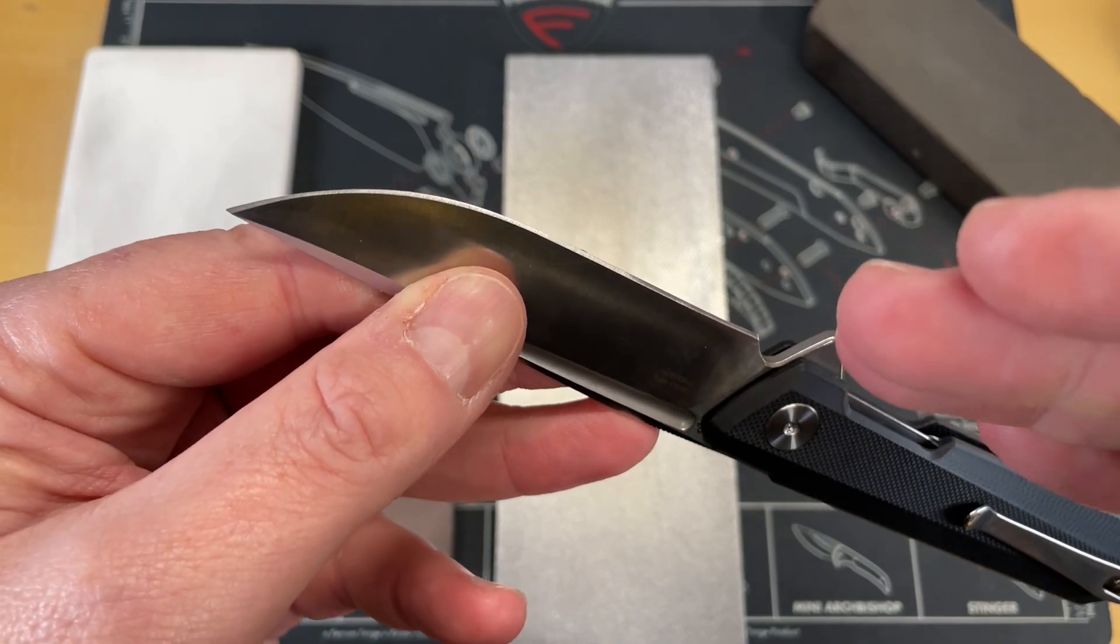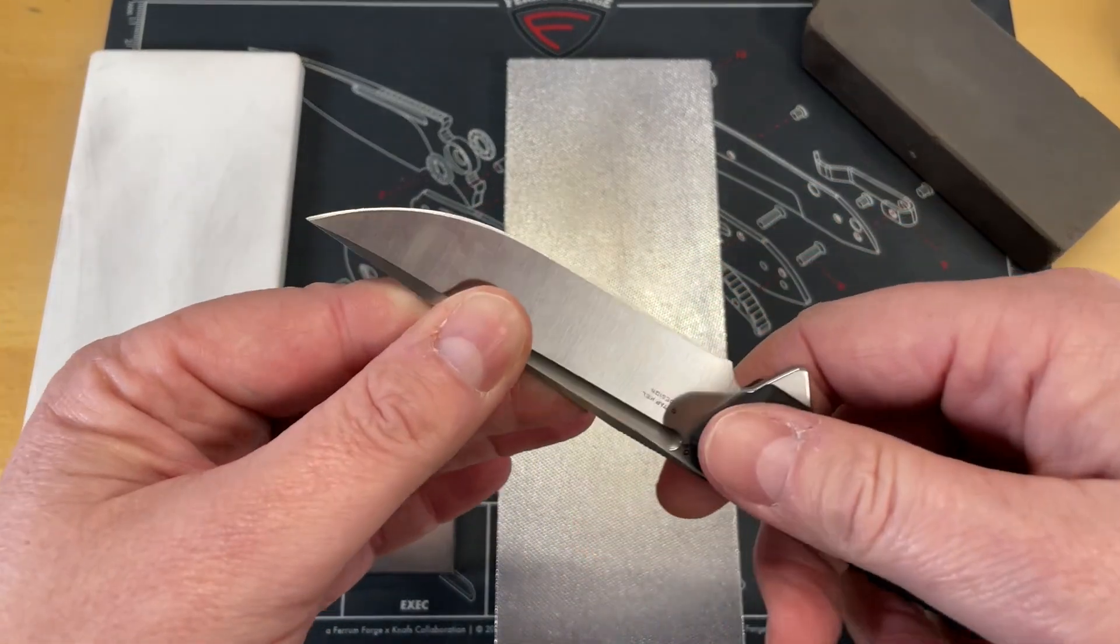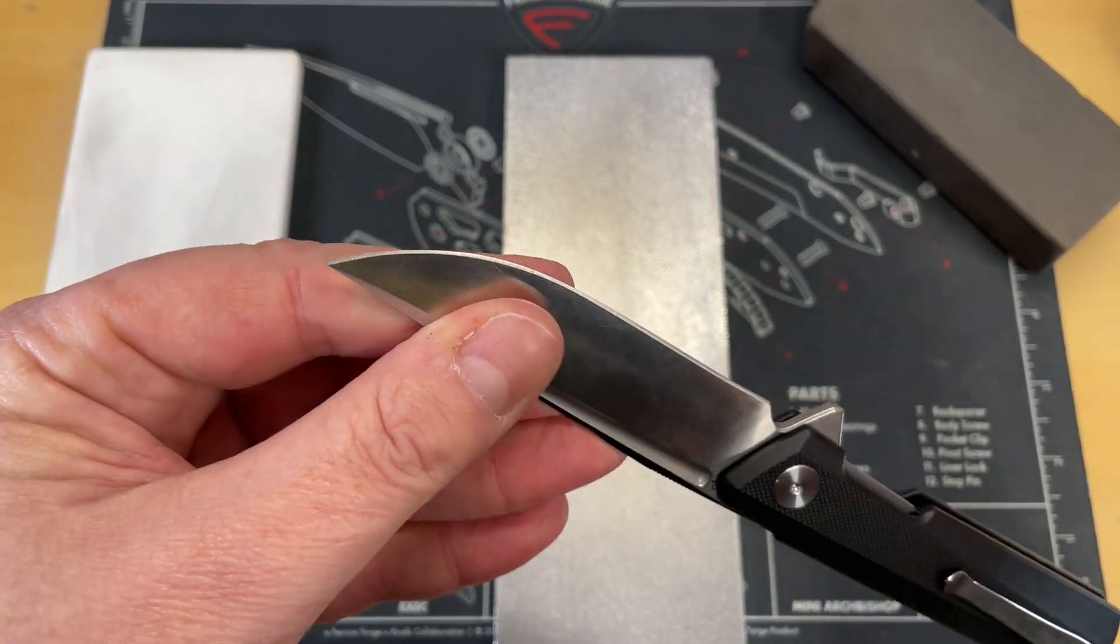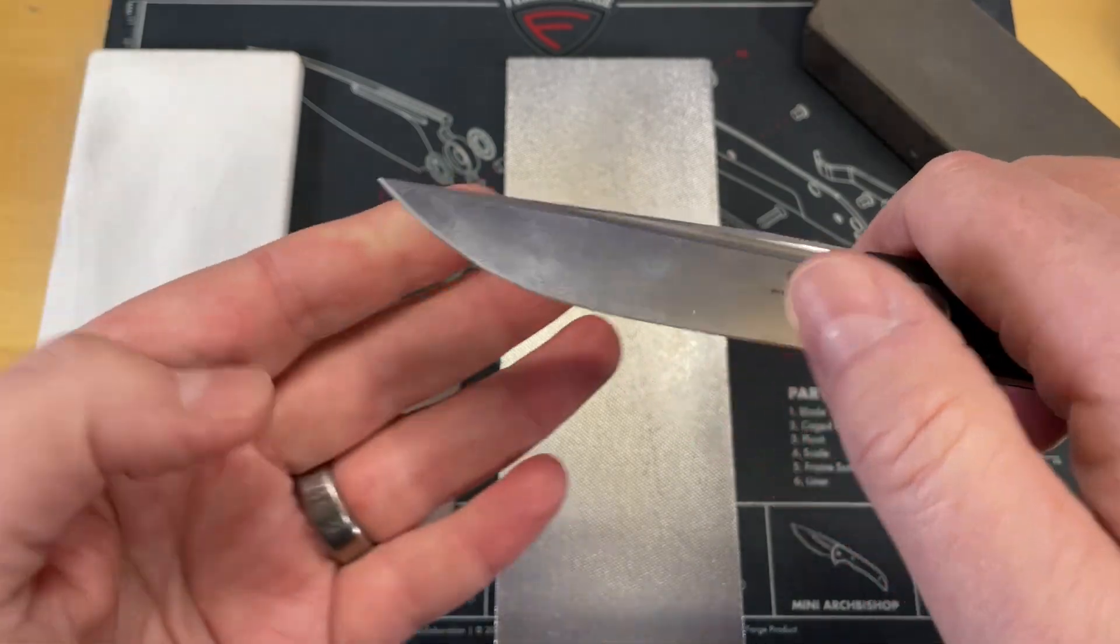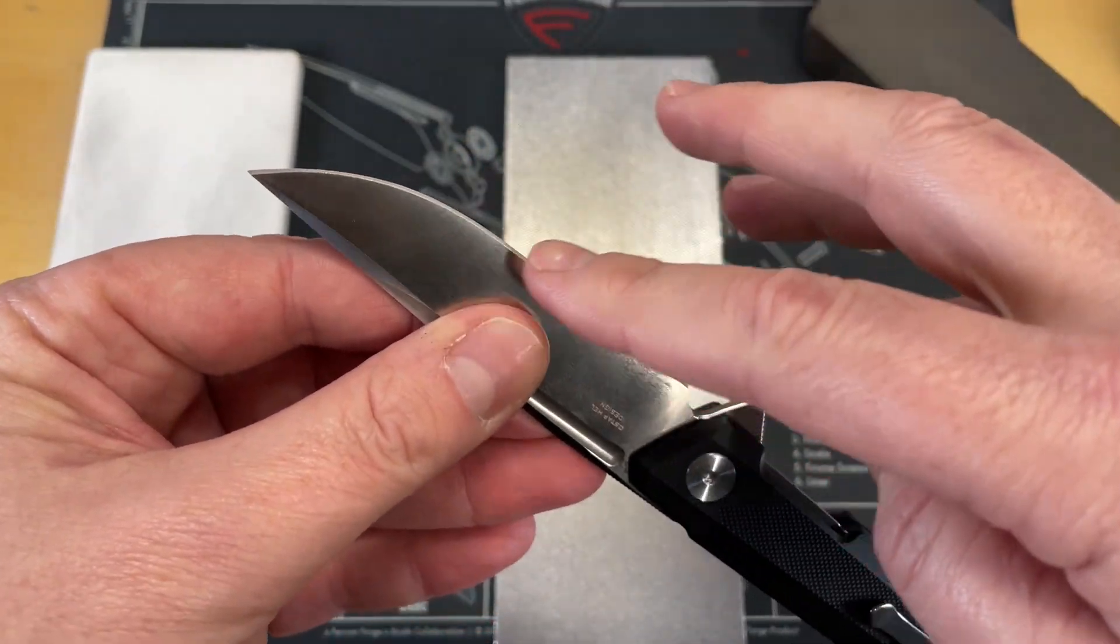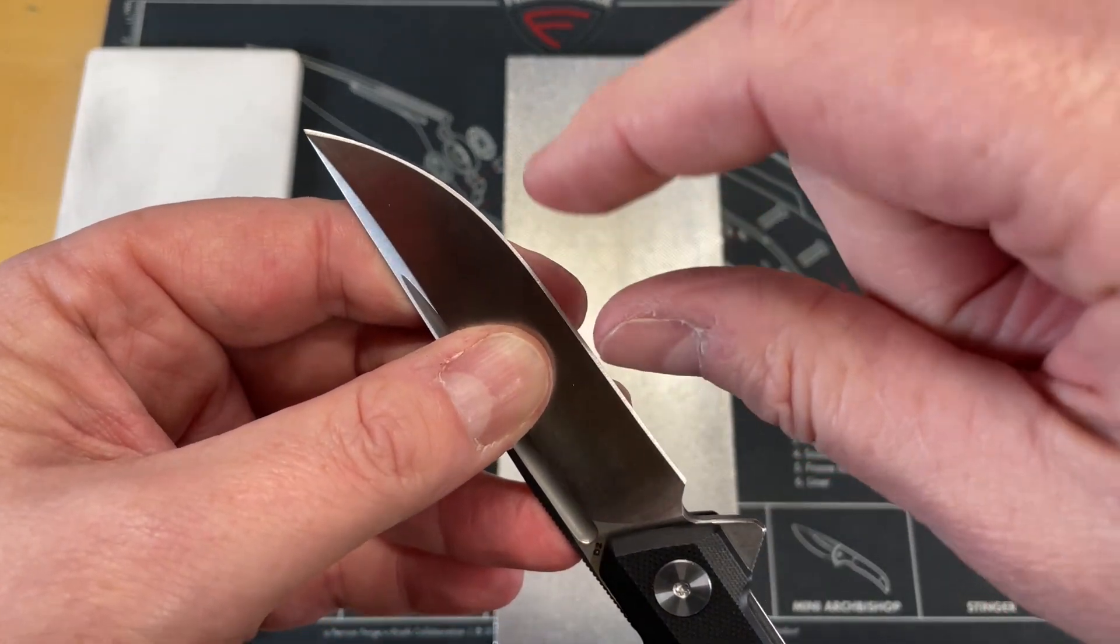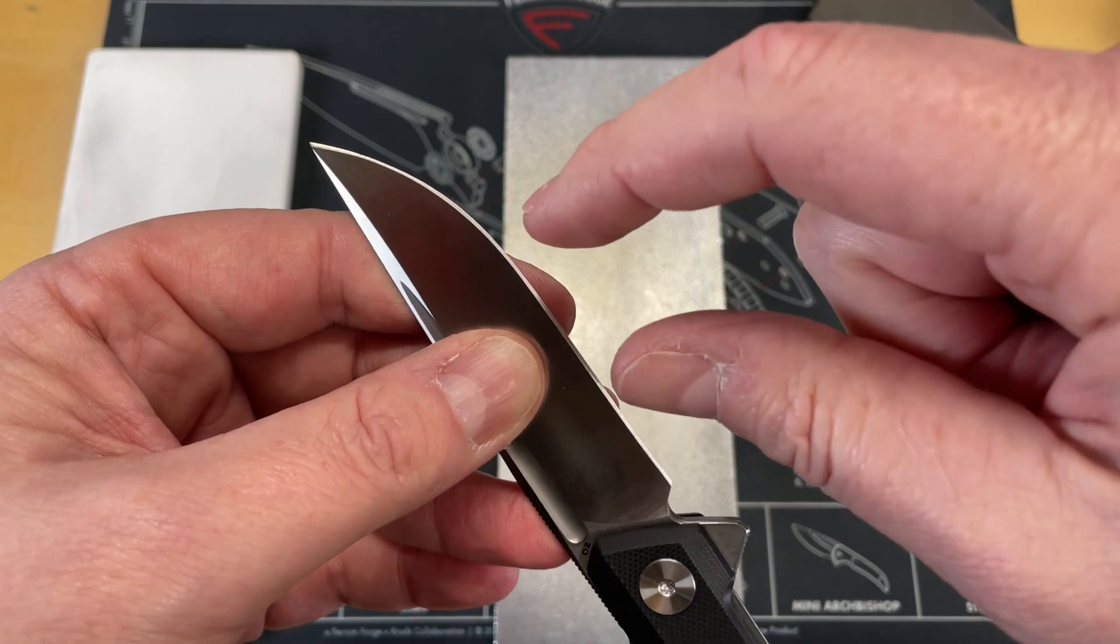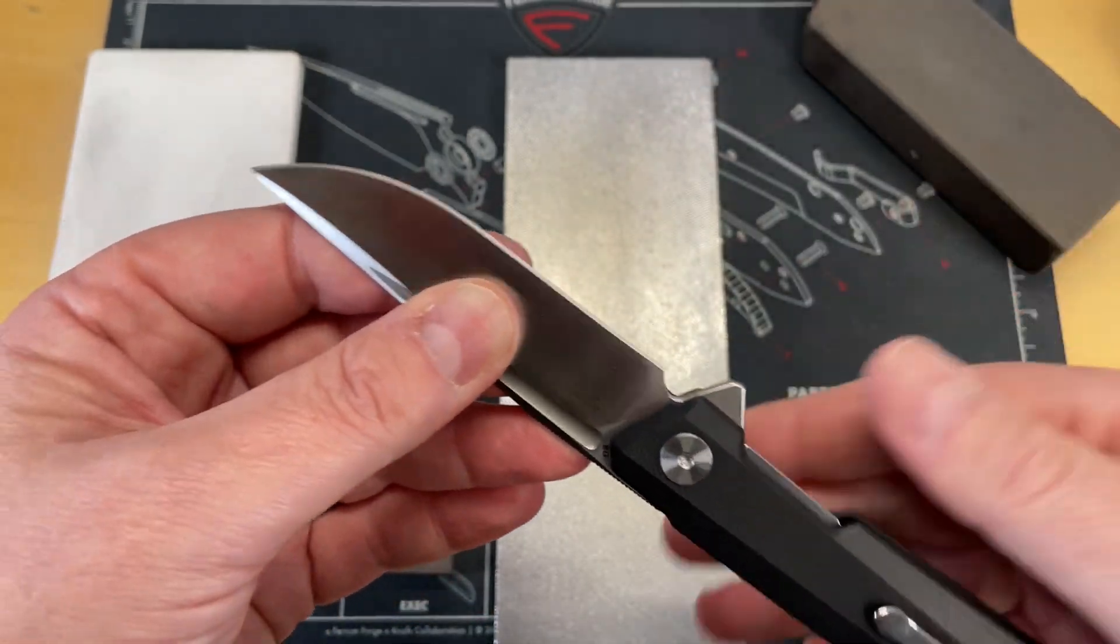But I will tell you that the finer the stone, taking it up in grit makes it no sharper. Once you've established that apex and you've apexed it, it doesn't get any sharper. All you've done is refine that scratch pattern or those saw teeth, and go from like a really coarse cross cut saw to more of a silky finish saw, depending on what you're going to cut.